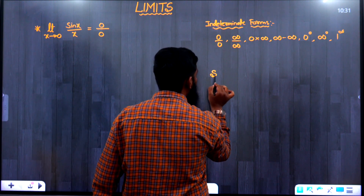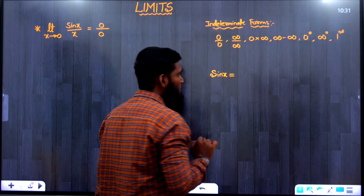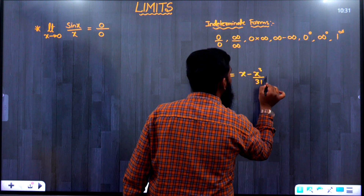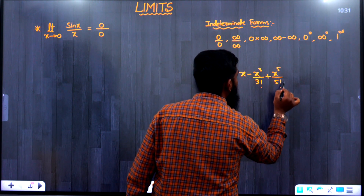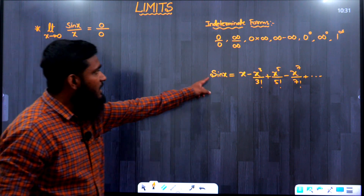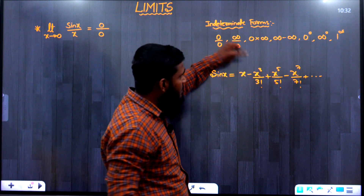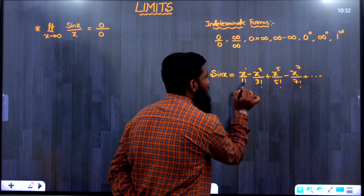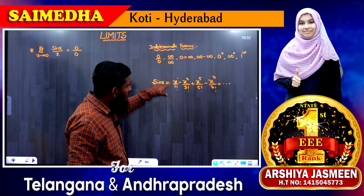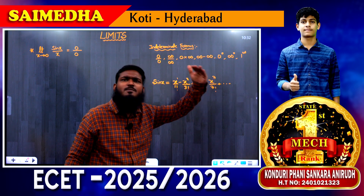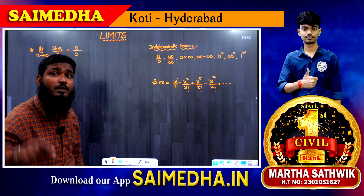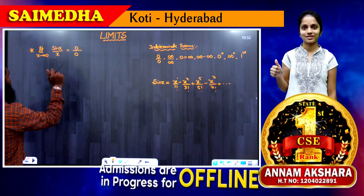We have the expansion of sin(x): x − x³/3! + x⁵/5! − x⁷/7! + ... and so on. Notice the pattern: odd powers (1, 3, 5, 7, 9, ...) with their factorials and alternating signs (plus, minus, plus, minus). This is how you remember the sin(x) expansion.